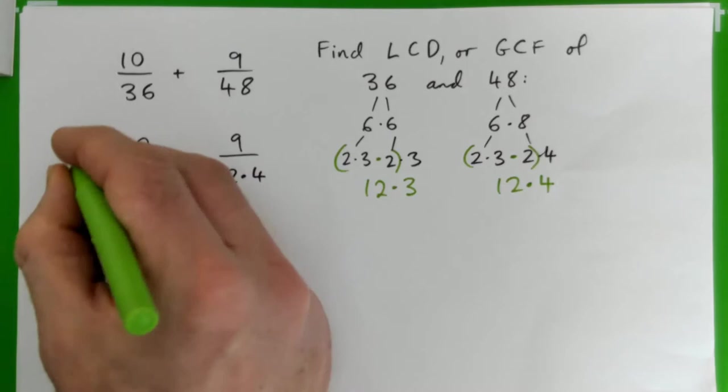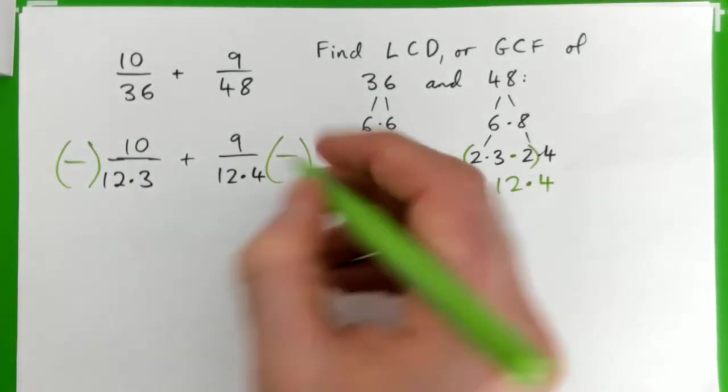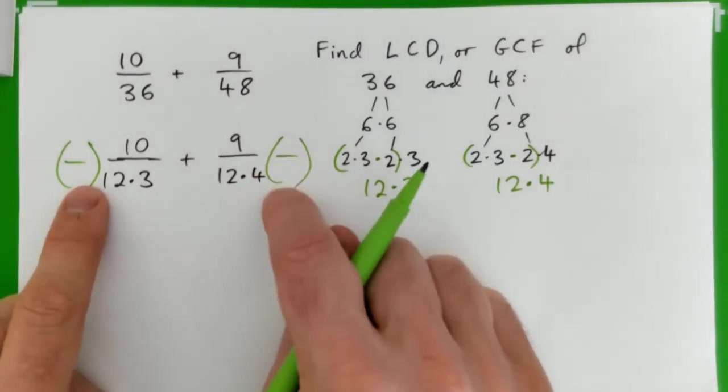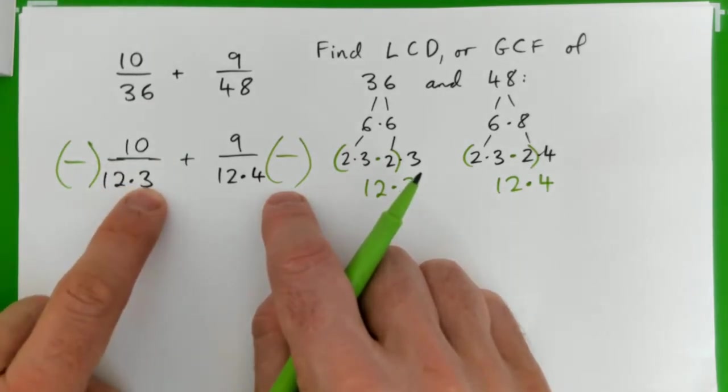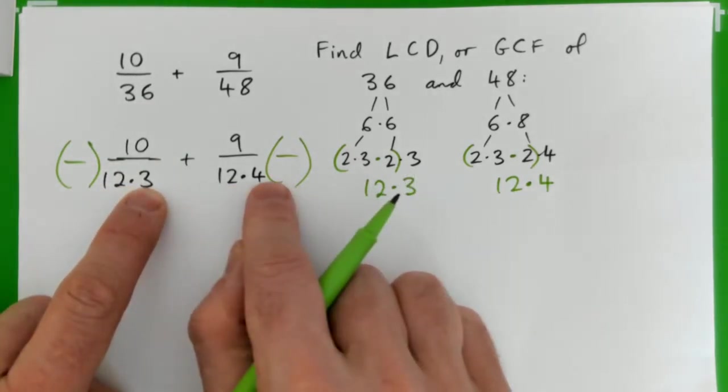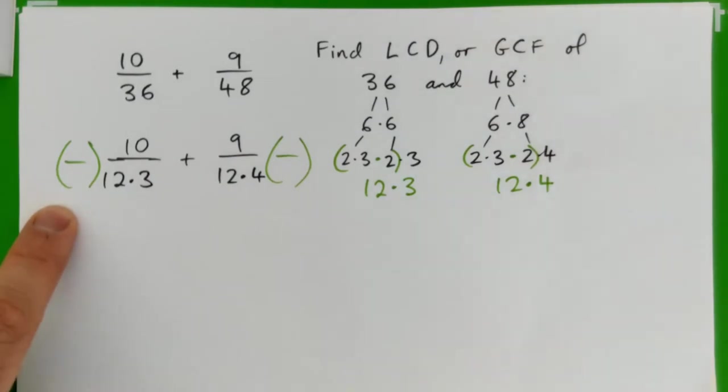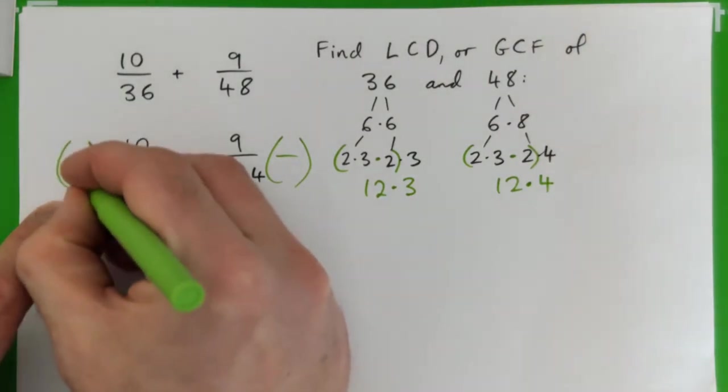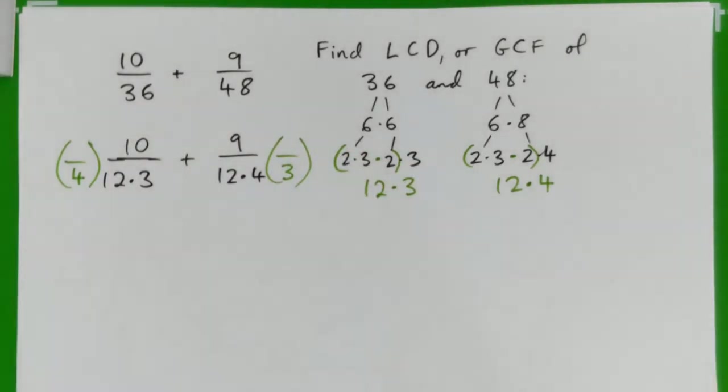So now to find the lowest common denominator, we've got to multiply both bottoms so that both bottoms are the same. So the factors here is 12 times 3, and this one is 12 times 4. So to make both bottoms the same, you could multiply this guy by a 4, and multiply this guy by 3. Now both bottoms are the same.